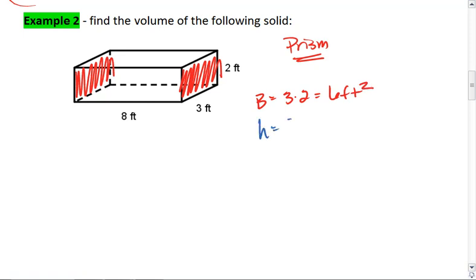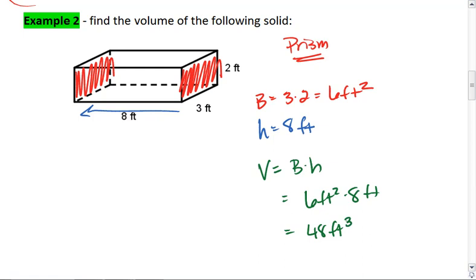The height is 8 feet, which means the volume is B times h. 6 feet squared times 8 feet gives me 48 feet cubed. And that is the volume of this solid.